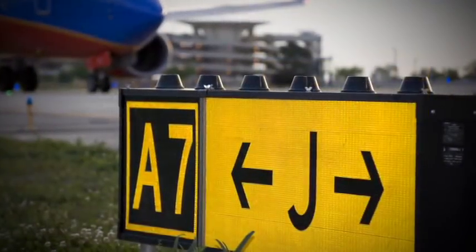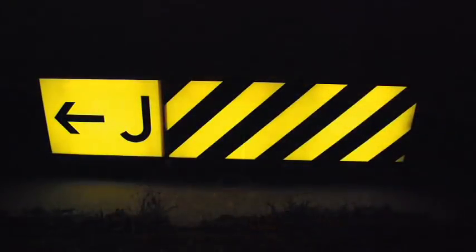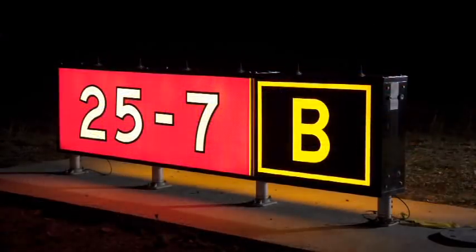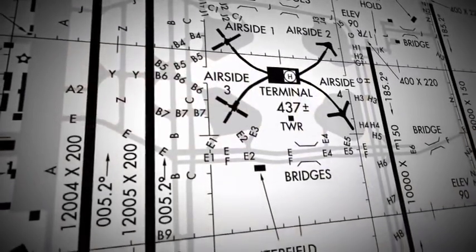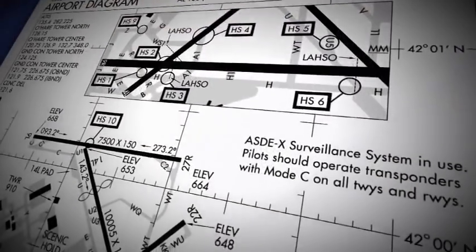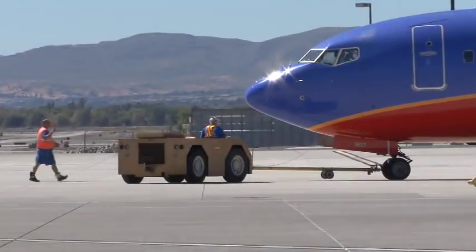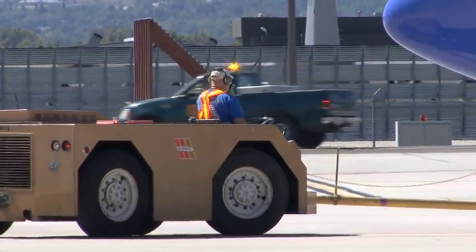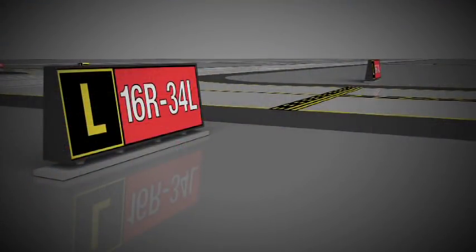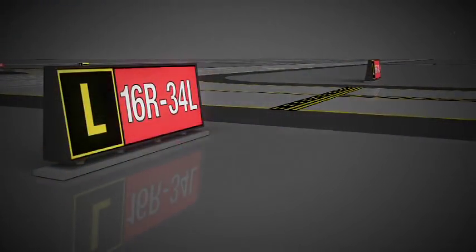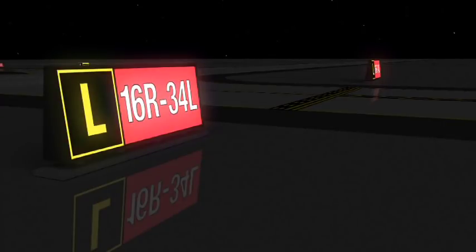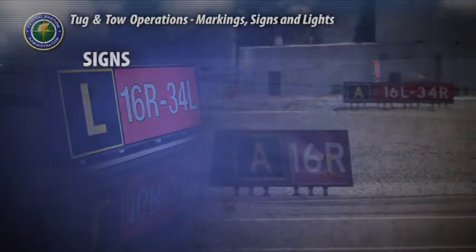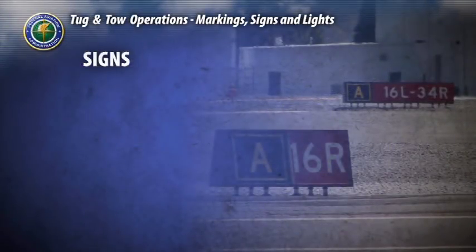While airports will adhere to these FAA guidelines for sign standardization, your airport's sign system may deviate from this plan. It's imperative that you become familiar with your particular airport's diagram to ensure safe, efficient, and repeatable aircraft and vehicle movement. For visual clarity at night and during inclement weather, signs may be illuminated internally or externally.